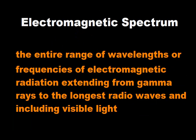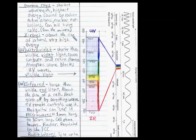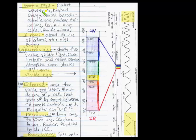The electromagnetic spectrum is the entire range of wavelengths or frequencies of electromagnetic radiation, extending from gamma rays all the way to the longest radio waves, including visible light. You need to understand gamma rays, x-rays, ultraviolet, visible light, infrared, and microwaves — their basic properties. Long waves like microwaves and radio waves are at one end; shorter waves like gamma rays are at the other. As wavelength decreases, energy increases, so gamma rays and x-rays are more damaging, while microwaves and radio waves are less damaging.